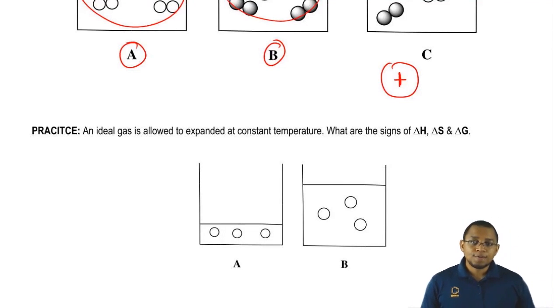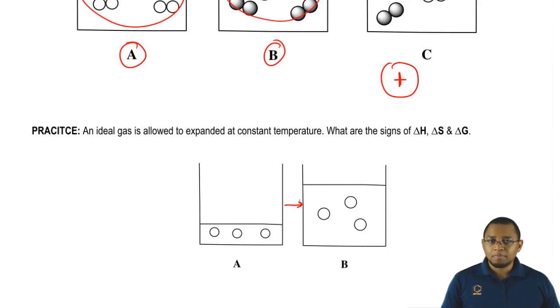First of all, delta S. Remember S is chaos, entropy. Here the gases in A are becoming like the gases in B. They transition and now they become like the picture in B. Ask yourself, since the gases have more room to bounce around, will their entropy increase or decrease?